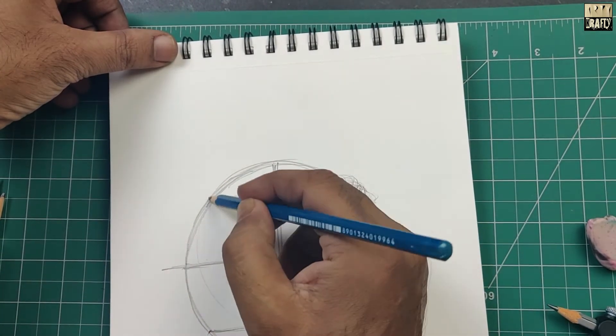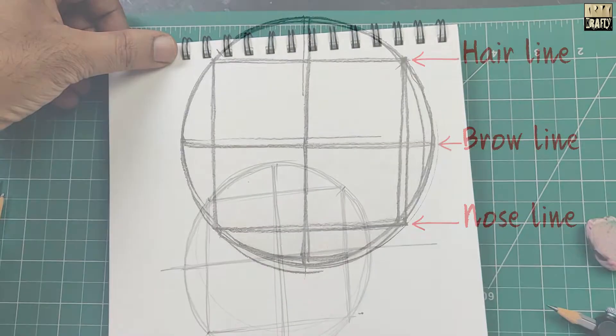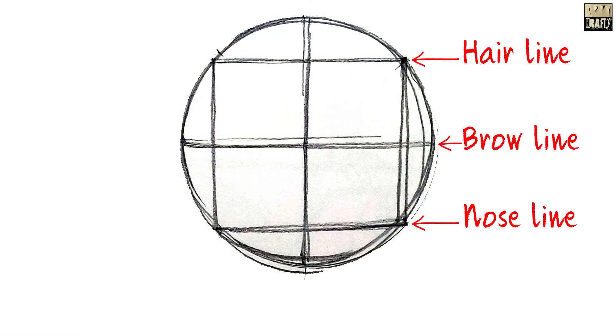The top line will eventually become the bottom hairline. The bottom line will become the nose line, while the center line will become the brow line.